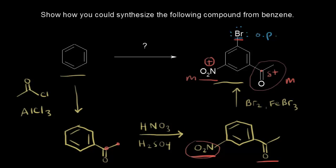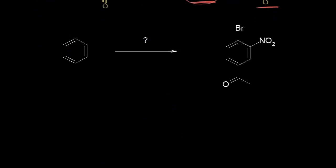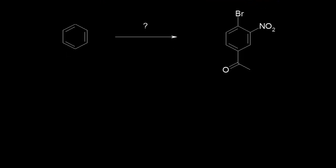Let's do another problem — it has the exact same groups as the previous problem, but this target molecule looks a little different. So we're going to need to do the reactions in a different order. Let's start by analyzing the groups. The bromine is an ortho-para-director because of the lone pairs. The nitro group is a meta-director because of the +1 formal charge. And the acyl group is a meta-director because of the partial positive charge on the carbonyl carbon.